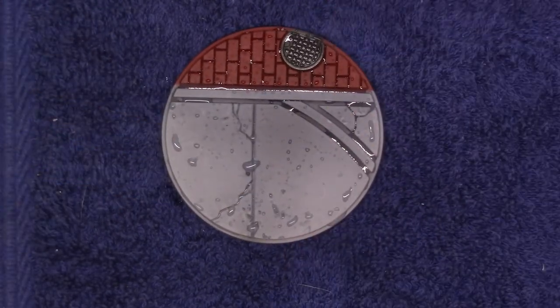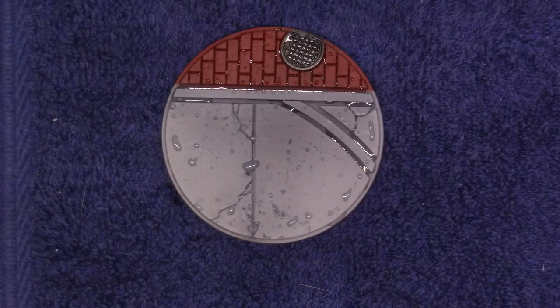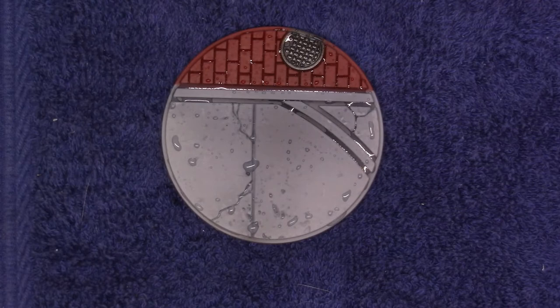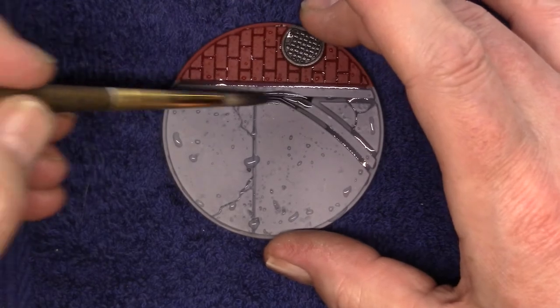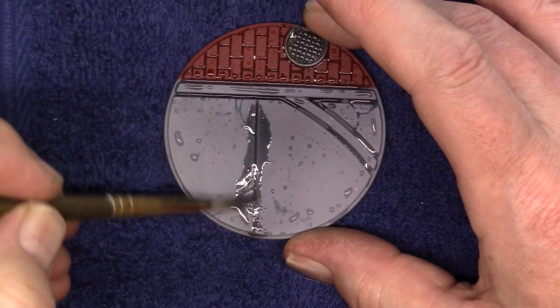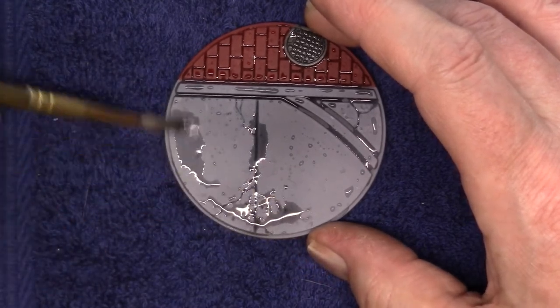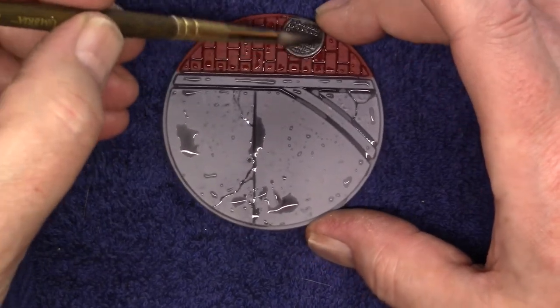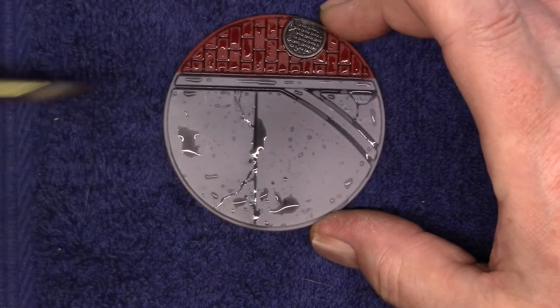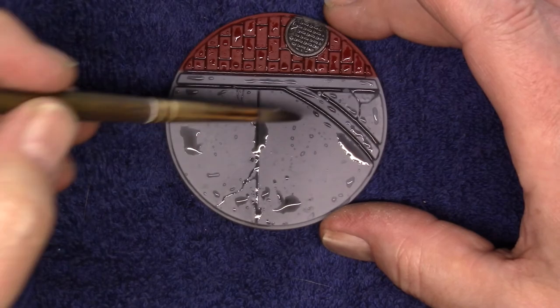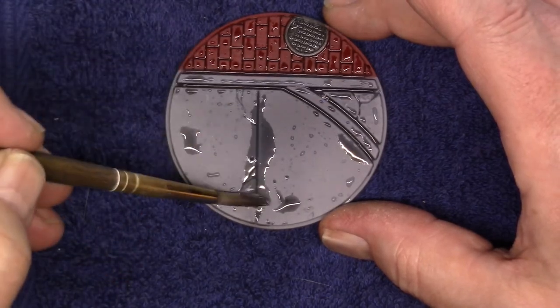Get as much water as I can in there. I'm going to take this Vallejo Game Color wash, this is the black wash. I've mixed it 50/50 with water and I'm just going to start going over this whole thing with the wash. Right now I'm just wanting it to get into the cracks. There you can see how the capillary action is getting it all down in the cracks.